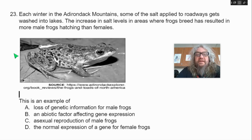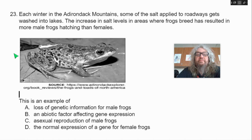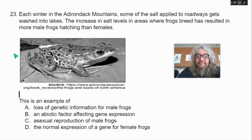23. Each winter in the Adirondack Mountains, some of the salt applied to roadways gets washed into lakes. The increase in salt levels in areas where frogs breed has resulted in more male frogs hatching than females. This is an example of — A, a loss of genetic information for male frogs; B, an abiotic factor affecting gene expression; C, asexual reproduction of male frogs; D, the normal expression of a gene for female frogs.